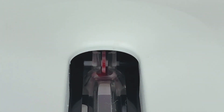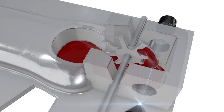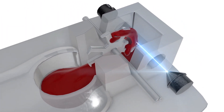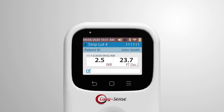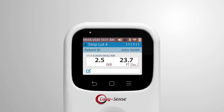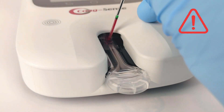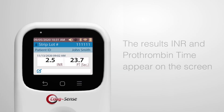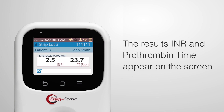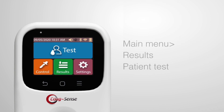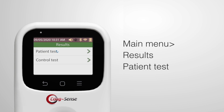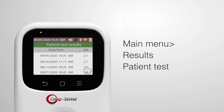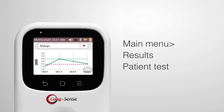The light should go out and the meter should display 'Testing, please wait.' The testing time is the patient's actual clotting time as the system produces a true prothrombin time. Never add more blood to the test strip and never collect a second sample from the same finger stick. When testing is complete, the results appear on the screen. The test result is recorded in memory and can be found on the main menu using Results and then Patient Test.